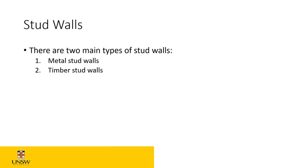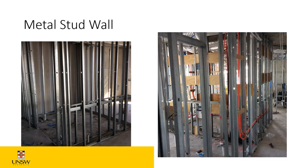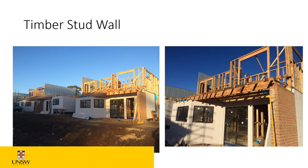Then we touched on stud walls — two main types: metal stud walls and timber stud walls. Metal stud walls are easy to install, lightweight, don't rust, and come in standard lengths. Timber stud is stronger, can take more load, takes more time, is not as durable as metal stud, but is more solid. Some people prefer it, and it's more expensive.